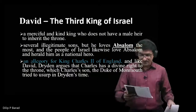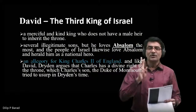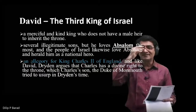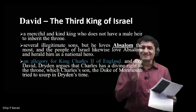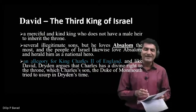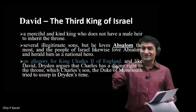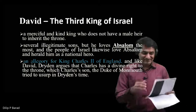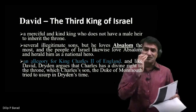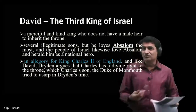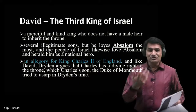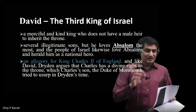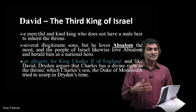David is the third king of Israel. The first king was God, but the Jews eventually chose human kings. As part of general knowledge, you may be curious to know who the first and second kings were — Google will help you find that. David is the third king of Israel, the holy land.